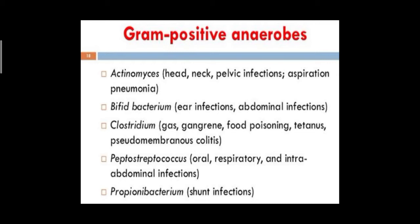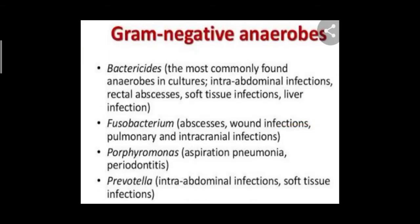Propionibacterium causes shunt infections — specifically infections in the brain involving the cerebrospinal fluid. Gram-negative anaerobes include Bacteroides and Fusobacterium. Fusobacterium causes abscesses, meaning the formation of pus in dead or injured tissue.